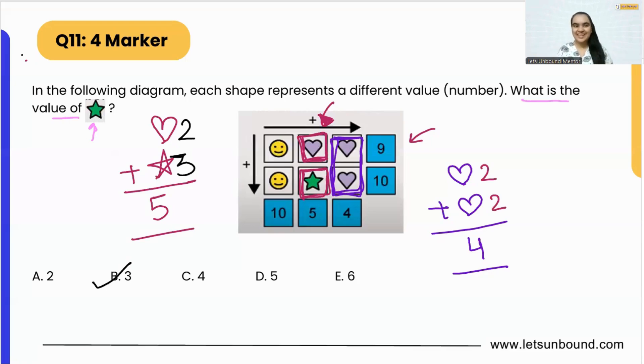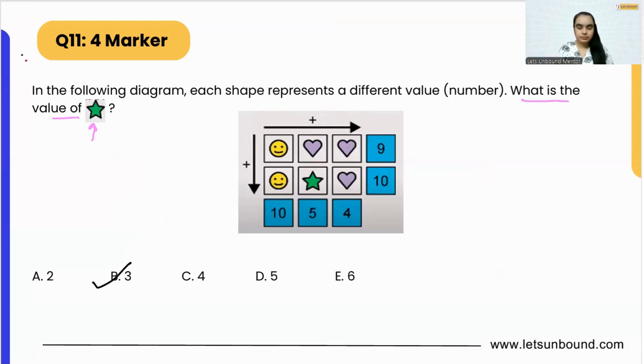Now what if you have started this portion like this: smiley plus heart plus heart equals to nine? Then you have to know the value of this heart, along with it you should know the value of this smiley as well. So it becomes one step more, right?